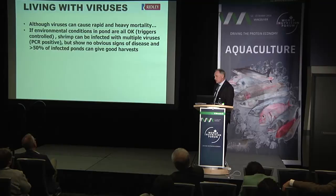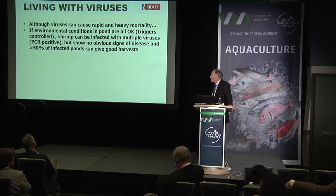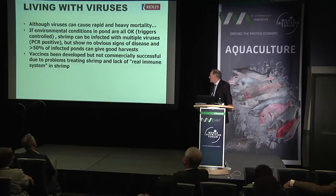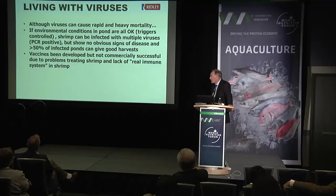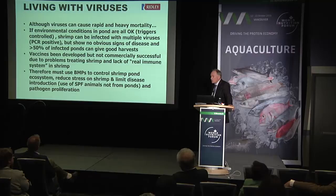Living with viruses: as long as you keep pond conditions in good shape, shrimp can be infected with multiple viruses but if you maintain water quality, dissolved oxygen, and nutrition, you can still get a successful harvest — it's all about the management. There's no treatment for these viruses, but you can still get a good return with careful husbandry. We've had some progress in vaccine development, but shrimp don't really have an immune system, so a true vaccine doesn't really work — though some examples have shown promise. Basically, in the absence of real treatments, we need best management practices and SPF and SPR animals.